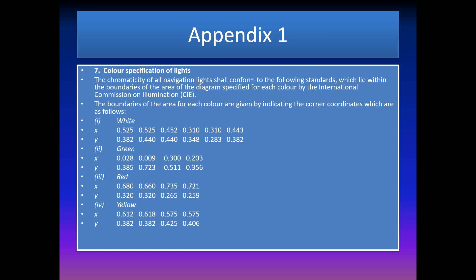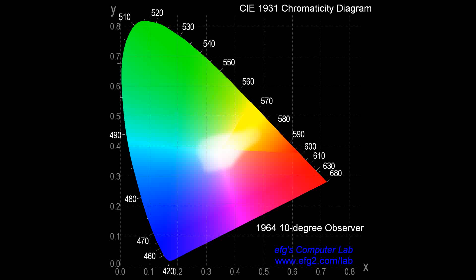For example, the masthead light must be seen as white throughout its 225-degree arc and not be confused with yellow; the red light should not look pink; the green should not look blue. Similarly, the yellow towing light should not be confused for a white stern light. A chromaticity graph specifies the required chromaticity sectors for green, blue, red, and yellow lights, and manufacturers must ensure the color, luminance, and hue are maintained throughout the sector of visibility.